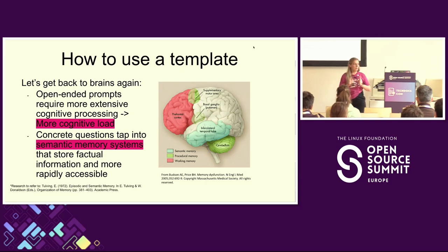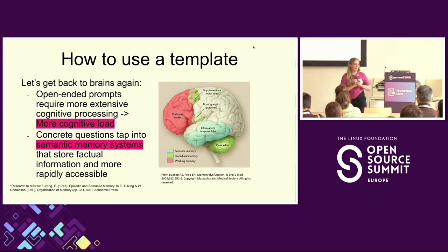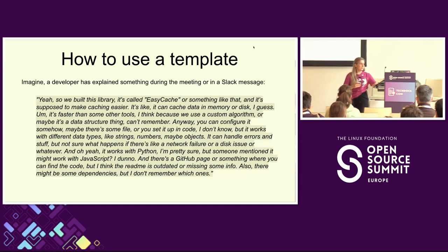If you have a very abstract prompt, it requires more cognitive effort than being asked questions one by one. For many people, it's easier to answer questions about yourself than to 'tell about yourself' without any prompting. The second reason is that concrete questions tap into semantic memory systems rather than procedural memory or working memory, and they're more rapidly accessible because of where they're located in our brain's environment.